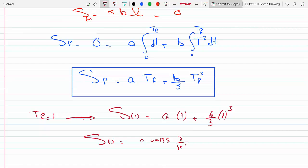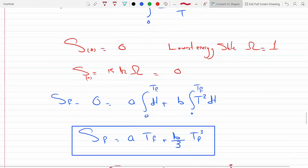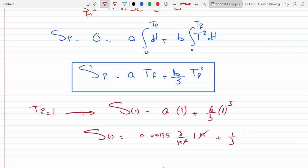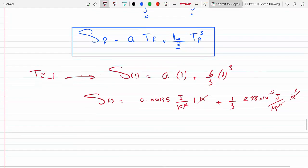A is 0.00135 joules per kelvin squared times 1 kelvin plus one third, B is 2.48 times 10 to the minus 5 joules per kelvin to the 4 times kelvin. These guys go away, this is going to be kelvin cubed because it's T cubed, and I have one kelvin left.